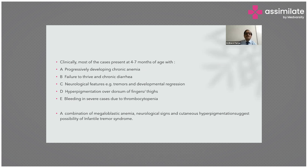Clinically, most cases present at four to seven months of age with progressively developing chronic anemia, failure to thrive, chronic diarrhea, neurological features including tremors and developmental regression, hyperpigmentation of the knuckles (dorsum of the fingers and thighs), and bleeding in severe cases due to thrombocytopenia. The combination of megaloblastic anemia, neurological signs, and cutaneous hyperpigmentation suggests the possibility of infantile tremor syndrome in children.